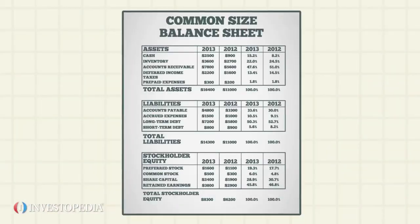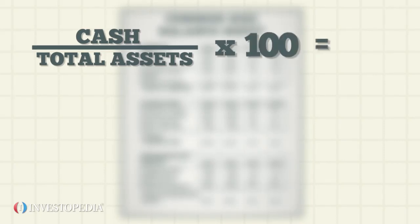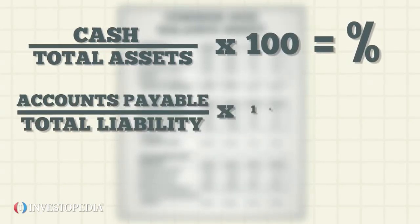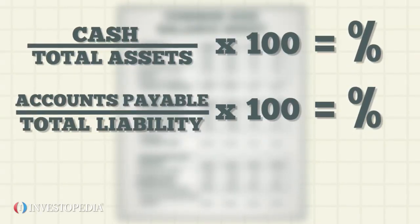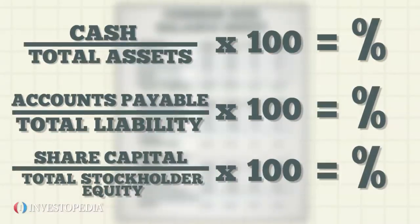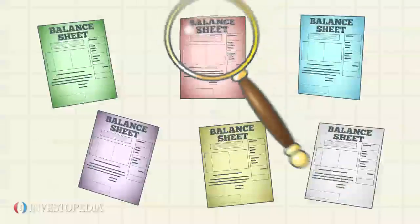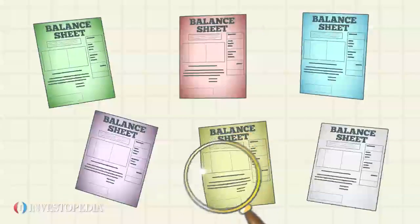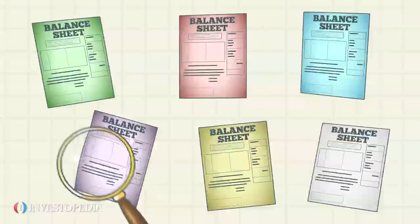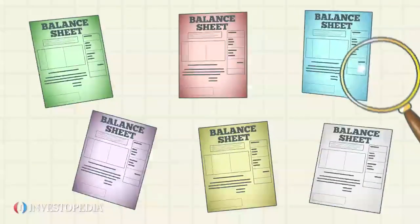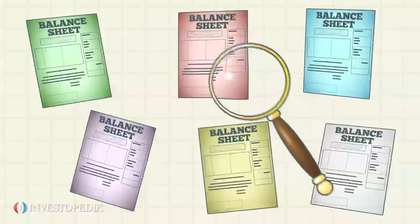On a Common Size Balance Sheet, an asset is compared to the company's total assets, a liability to its total liabilities, and stockholder equity to total stockholder equity. Common Size Balance Sheets can also be used to compare companies as part of an industry analysis or as research into a potential business acquisition.